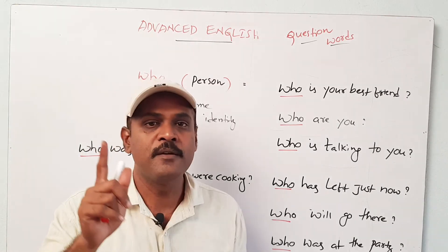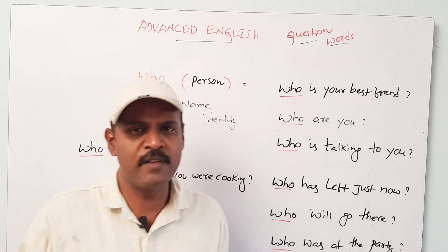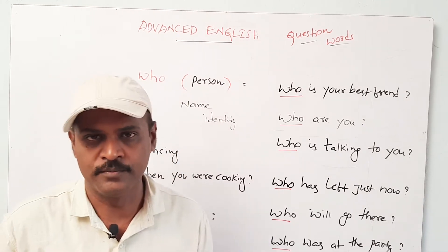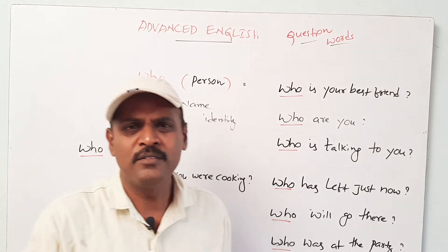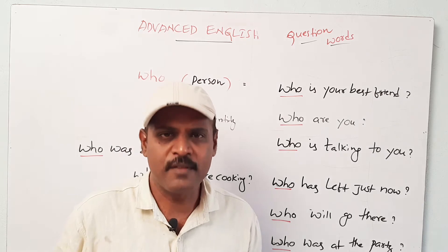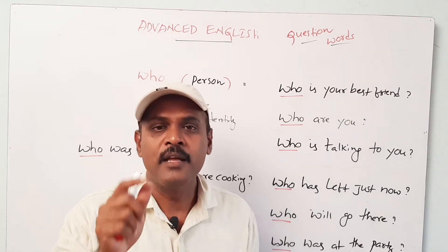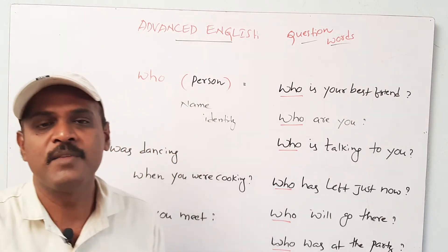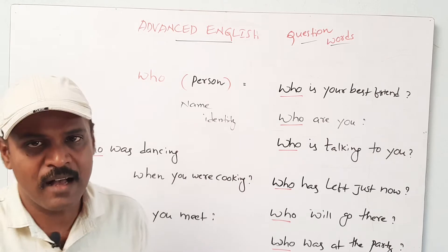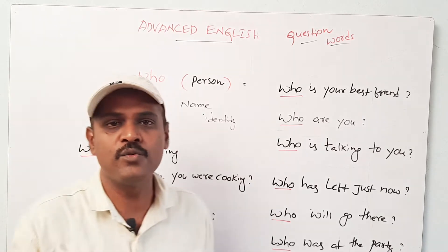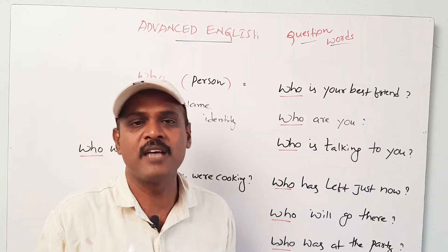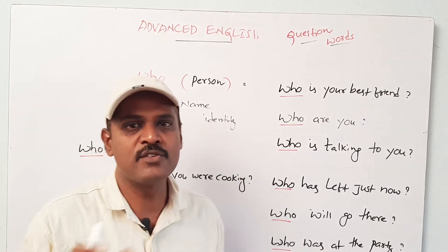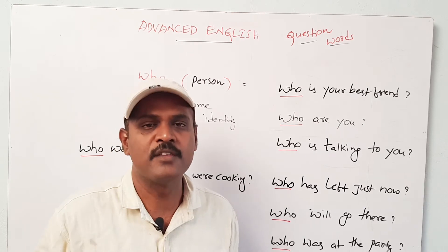The first one is with the help of helping verbs, and the second one is by WH-words. You know what helping verbs are? They are 24 in number. For instance: am, is, are, was, were, do, does, has, have, had, can, could, may, might, shall, should, and so on.